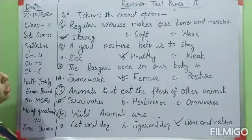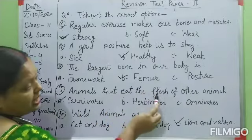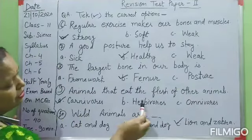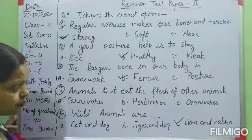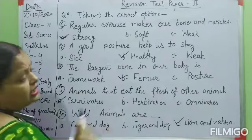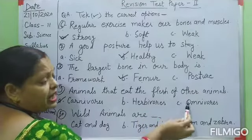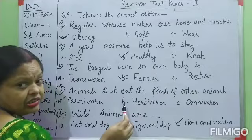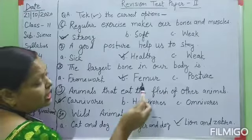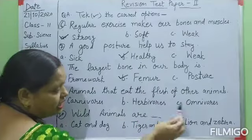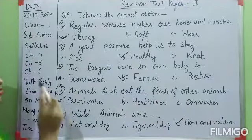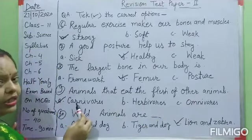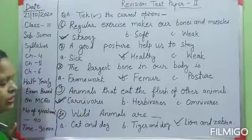Question number nine: animals that eat the flesh of other animals. Three options: A — carnivores, B — herbivores, C — omnivores. Omnivores eat both flesh and plants. Herbivores are plant-eating animals. Both options B and C are wrong here. The correct option is A — carnivores. Animals that eat the flesh of other animals are called carnivores.